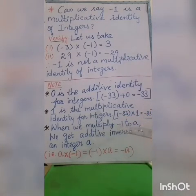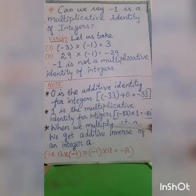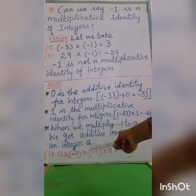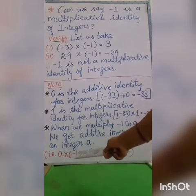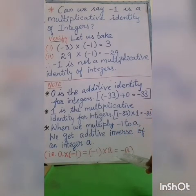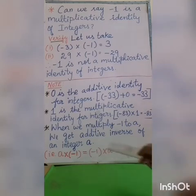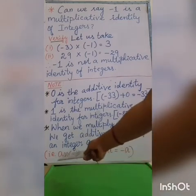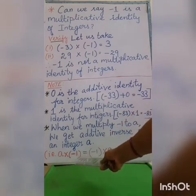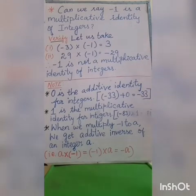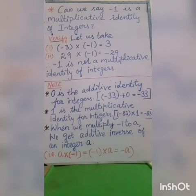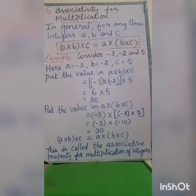When we multiply minus 1 to a — where a means any integer — we get the additive inverse of that integer. That is: a × (−1) = (−1) × a = −a. So taking a positive integer multiplied by minus 1 gives the negative integer. It is not a multiplicative identity; we say it gives the additive inverse of the integer.